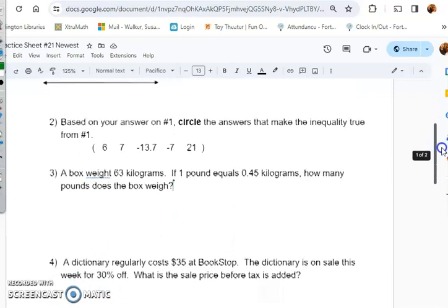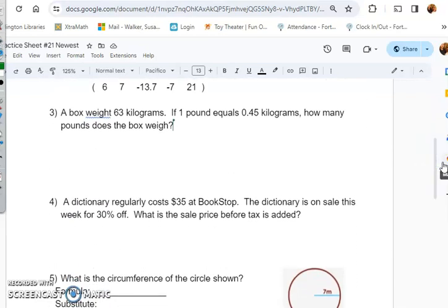Number three: a box weighs 63 kilograms. If one pound equals 0.45 kilograms, how many pounds does the box weigh? We can, if we want, do dimensional analysis where I start with 63 kilograms. Do I want kilograms? No. I put kilograms on bottom, pounds on top. But I can also set up a proportion.